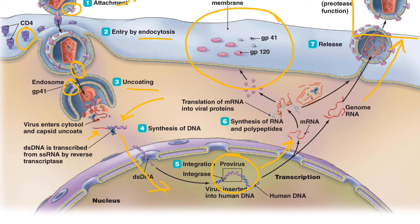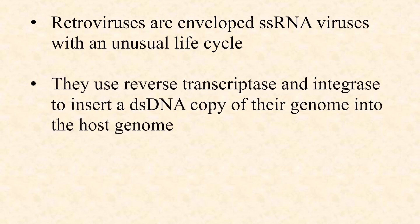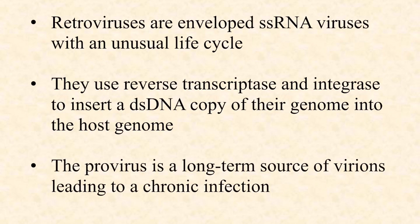Work your way through this slide a few times and think about all the different steps taking place. Consider how this fits with your concept of how viruses in general gain access, cause disease, replicate themselves, and exit. To hit the highlights: retroviruses are enveloped single-stranded RNA viruses with an unusual life cycle. They use reverse transcriptase and integrase to insert a double-stranded DNA copy of their genome into the host genome, and this provirus becomes a long-term source of virions, leading to a chronic infection.